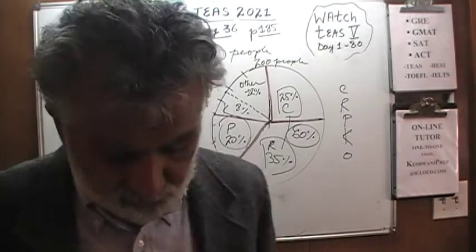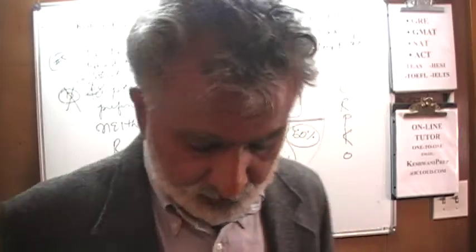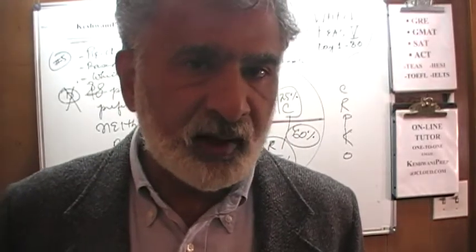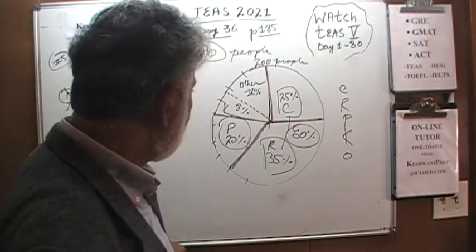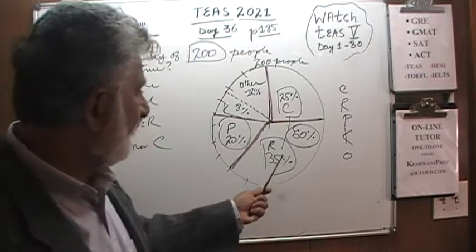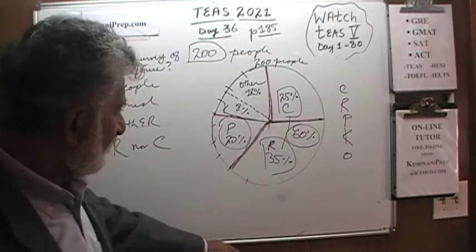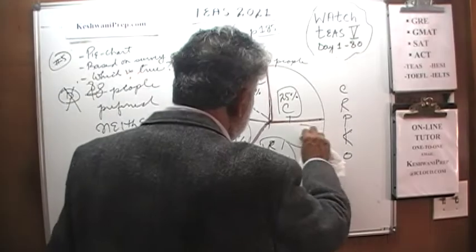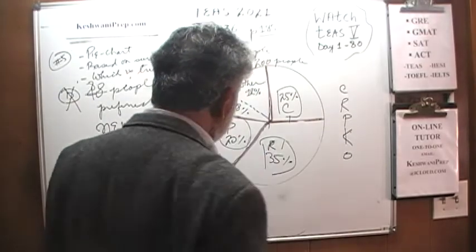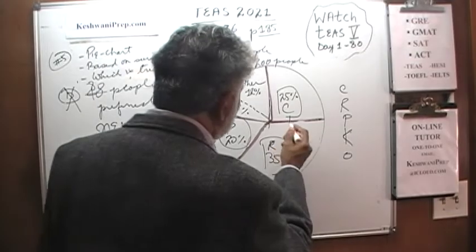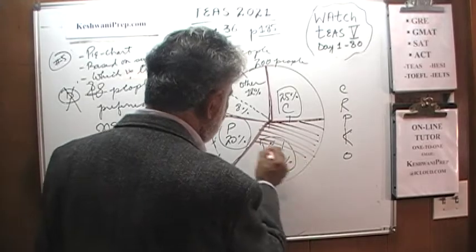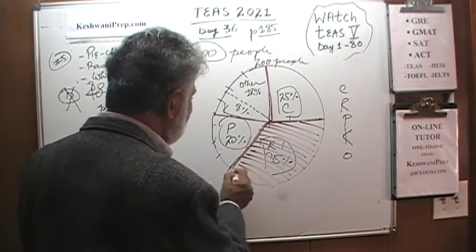The correct answer is Statement C — the fact that rock music is the most popular one. We can clearly see it is the biggest slice at 35%. Voila.